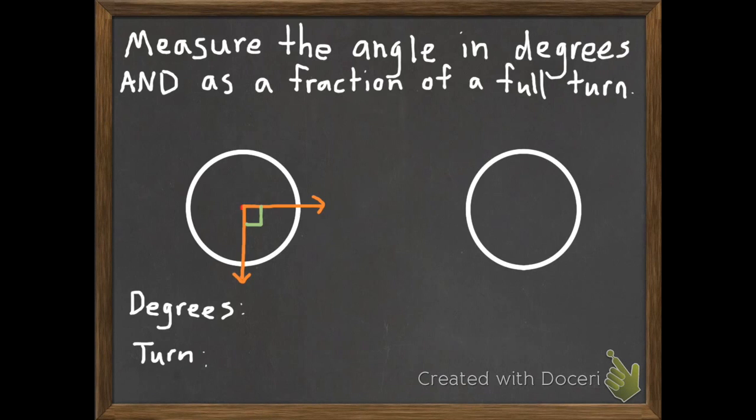So I know the degrees for this one has that little square there which tells me it's going to be 90 degrees. And the kind of turn is one-fourth of a turn.